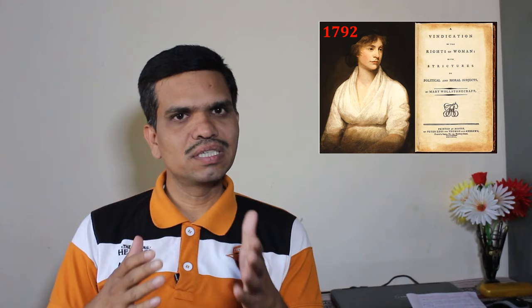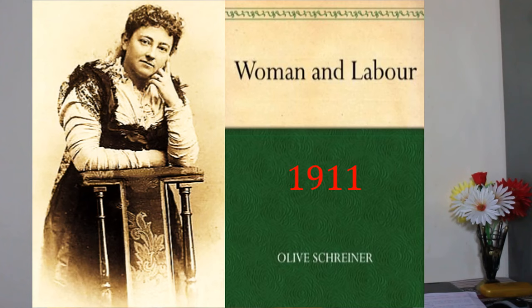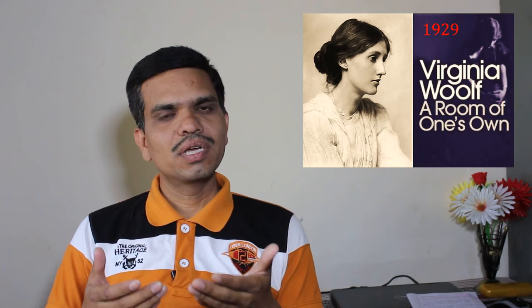The next significant critics and books include John Stuart Mill, who wrote The Subjection of Women, published in 1869; then Frederick Engels, who wrote The Origin of the Family, published in 1884; then Olive Schreiner, who wrote Women and Labour in 1911; and next we have Virginia Woolf, who wrote A Room of One's Own, published in 1929.